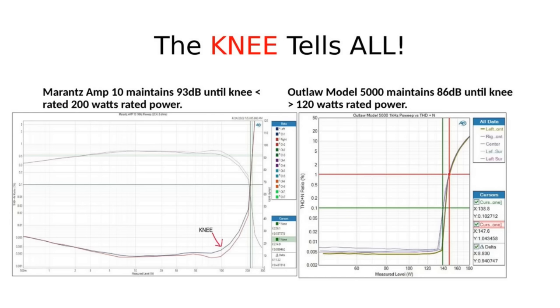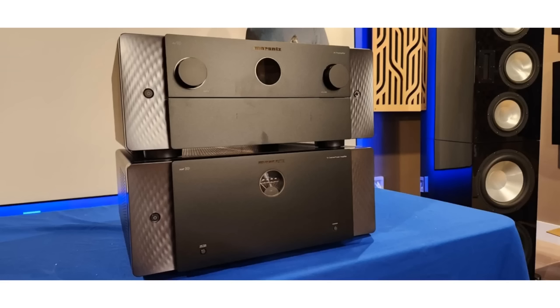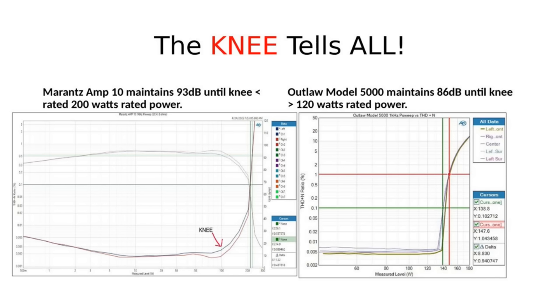In this case I did a video last week that the knee - amplifiers should be rated at or below the knee. If you look at these two examples, I've got the Marantz AV10 Amp 10 which I own. This amp, the Marantz, is rated to 200 watts but you can see it's high into the clipping zone, into the vertical part of the graph. At 0.1% I think I got a little over 200 watts, but it maintains a high SINAD of 93 dB all the way to about 120 watts which is where the knee is.